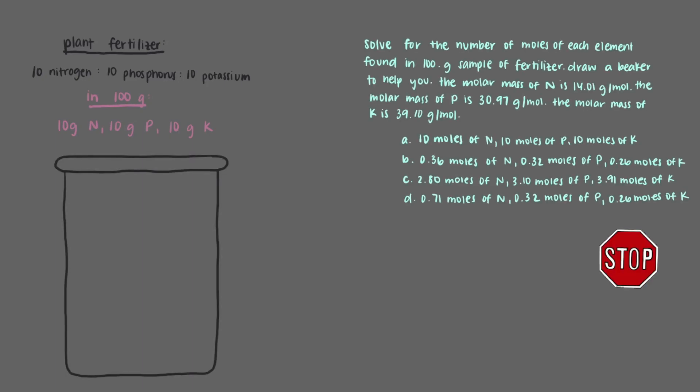Solve for the number of moles of each element found in a 100 gram sample of fertilizer. Draw a beaker to help you. The molar mass of nitrogen is 14.01 grams per mole. The molar mass of phosphorus is 30.97 grams per mole. And the molar mass of potassium is 39.10 grams per mole.